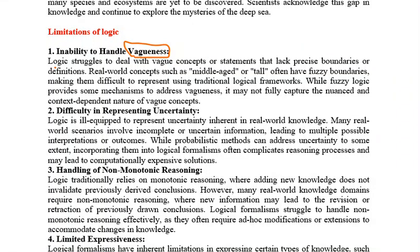Logic struggles to deal with vague concepts — statements that lack precise boundaries or clear definitions. It is very difficult for logic to handle vague concepts where we cannot define clearly. The best example for understanding vagueness is middle age, which I explained — it is easy to understand and illustrates this limitation well.